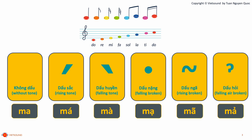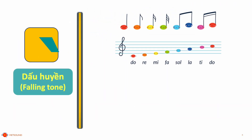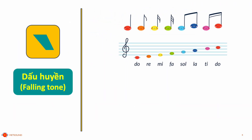Now let's talk about the falling tone. So when you say a word without tone, you are on the sol note. To make the falling tone in Vietnamese, you have to lower your voice to the low notes. For example, here I have the word CÁ without tone. Now let's make your voice a little bit lower to the low notes.